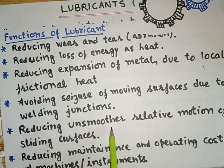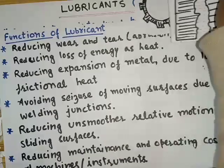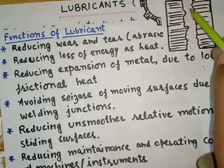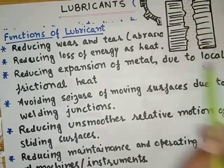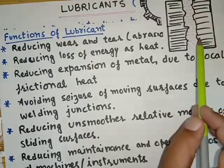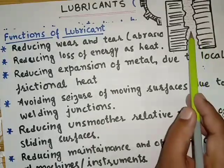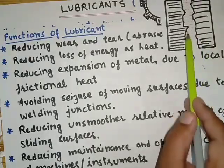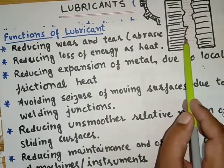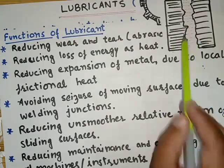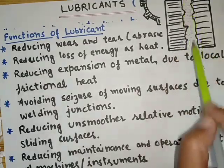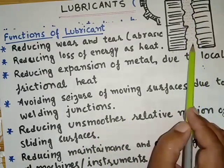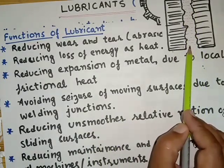The fifth function of a lubricant is reducing unsmoother relative motion of the sliding surfaces. The sliding surfaces may have unsmooth motion due to roughness. Lubricants fill these rough patches so that the metals are not in direct contact with each other, therefore the motion which was relatively unsmooth becomes smoother after introduction of the lubricant.